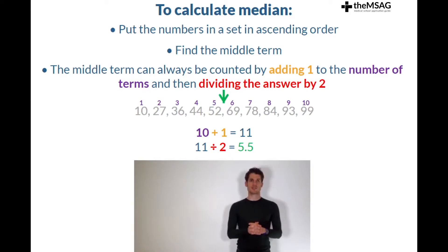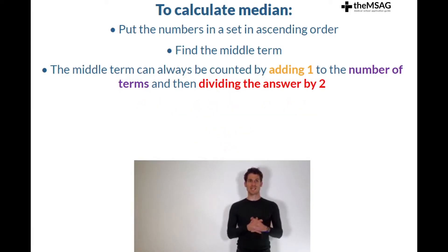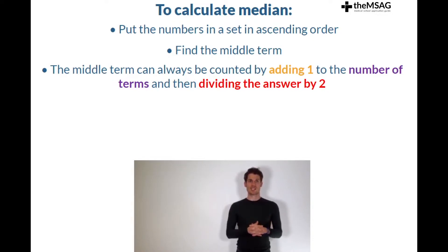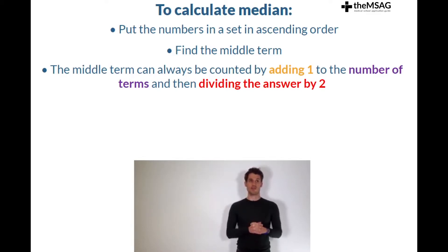This sounds okay until you are presented with a dense table full of information. Isn't it a big waste of time to write out all the terms in order? Yes. Instead, calculate what the middle term would be using the add 1 and divide by 2 method shown above.